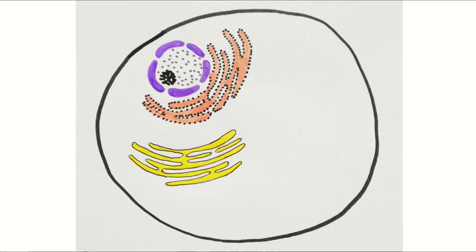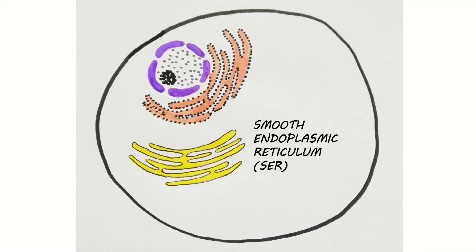There's another type of endoplasmic reticulum, and it looks very much like rough endoplasmic reticulum, but there are no ribosomes on the surface. We therefore call this smooth endoplasmic reticulum, or SER. Smooth endoplasmic reticulum synthesizes and transports lipids around the cell.